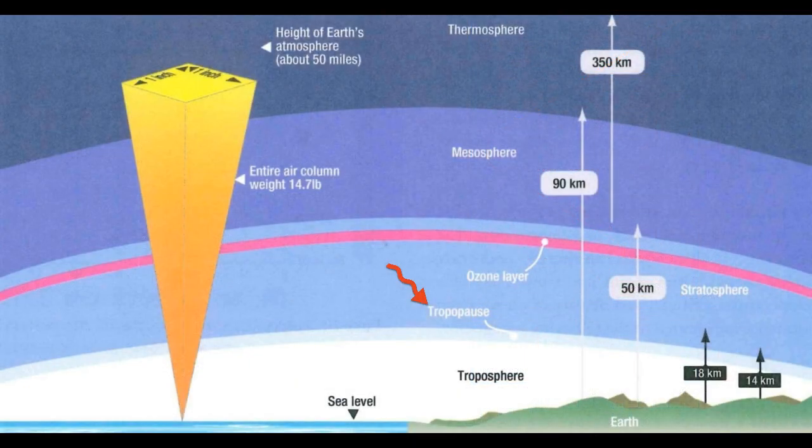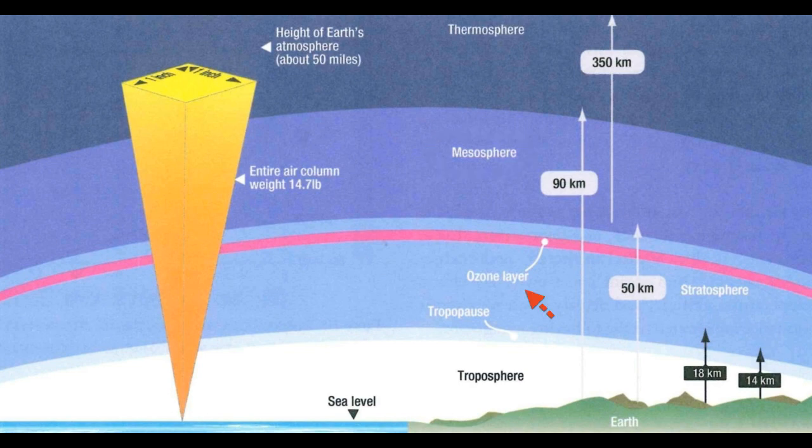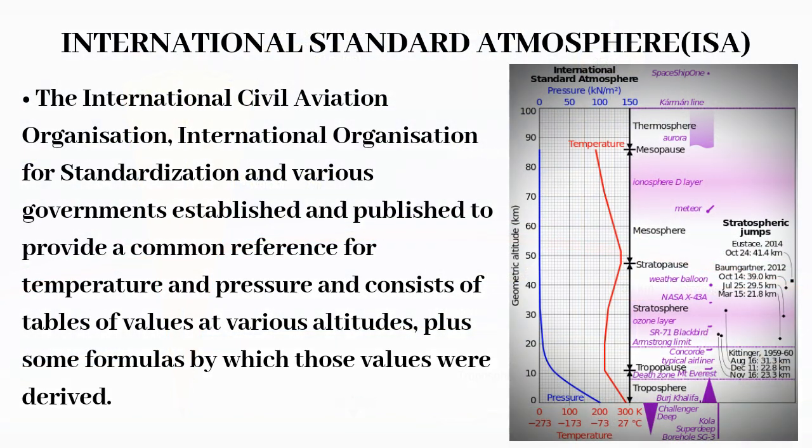The upper boundary of the troposphere is the tropopause. The stratosphere lies above the tropopause; temperature increases with altitude in the stratosphere to near zero degrees before decreasing again in the mesosphere, which lies above it. The stratosphere contains the ozone layer that protects the earth's inhabitants from harmful UV rays. Some civilian flights and numerous military flights occur in the stratosphere.